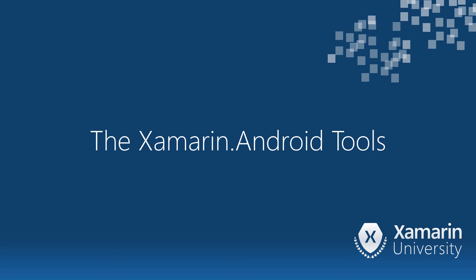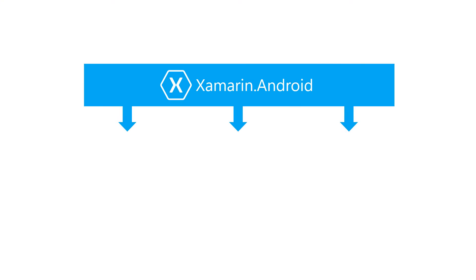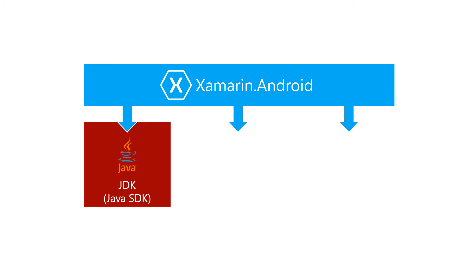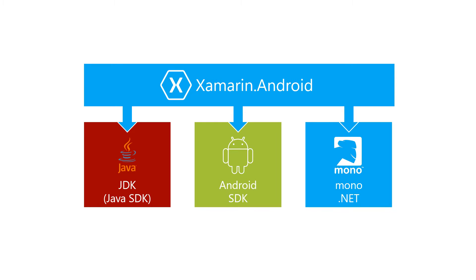In this video we'll explore the Xamarin Android toolchain and see how it leverages the Android and Java SDKs. Behind the scenes, Xamarin Android uses many of the native Android tools and libraries alongside the Mono libraries. This includes the Java SDK, the Android SDK, and a version of the Mono .NET libraries for Xamarin Android.